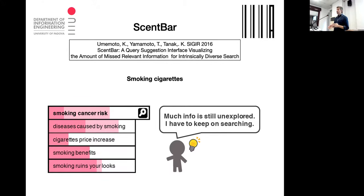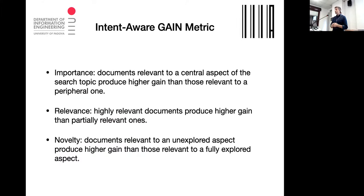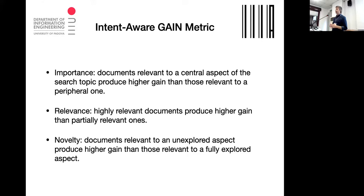This is a nice way to see different aspects of the same information need and how much information is missing from the collection. The approach defines the importance of a document: documents relevant for a central aspect among all possible aspects of the same query should be weighted more than others.